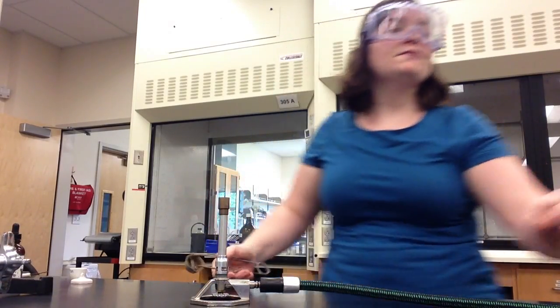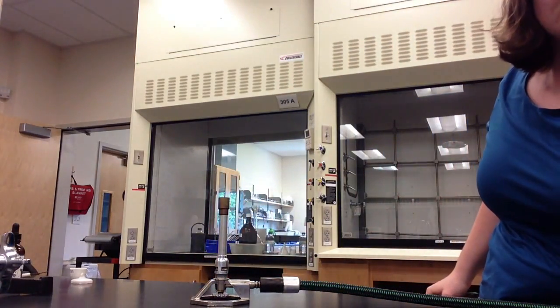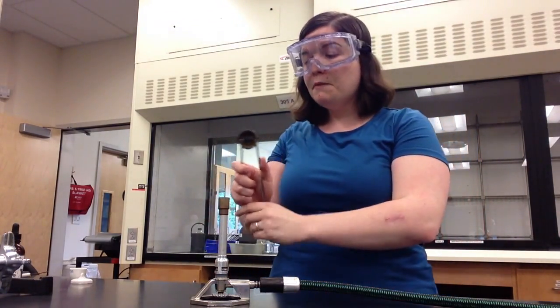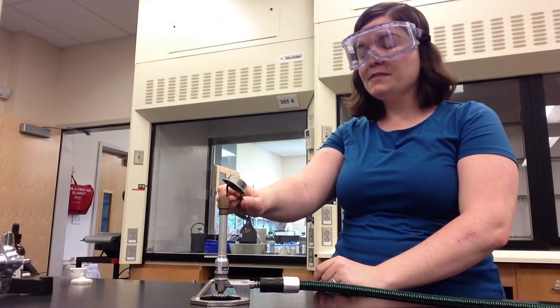To begin lighting your Bunsen burner, first turn the handle from perpendicular to parallel. You'll then hear gas coming out of the Bunsen burner, and when you're ready, you can put the striker next to the Bunsen burner and pull on it.